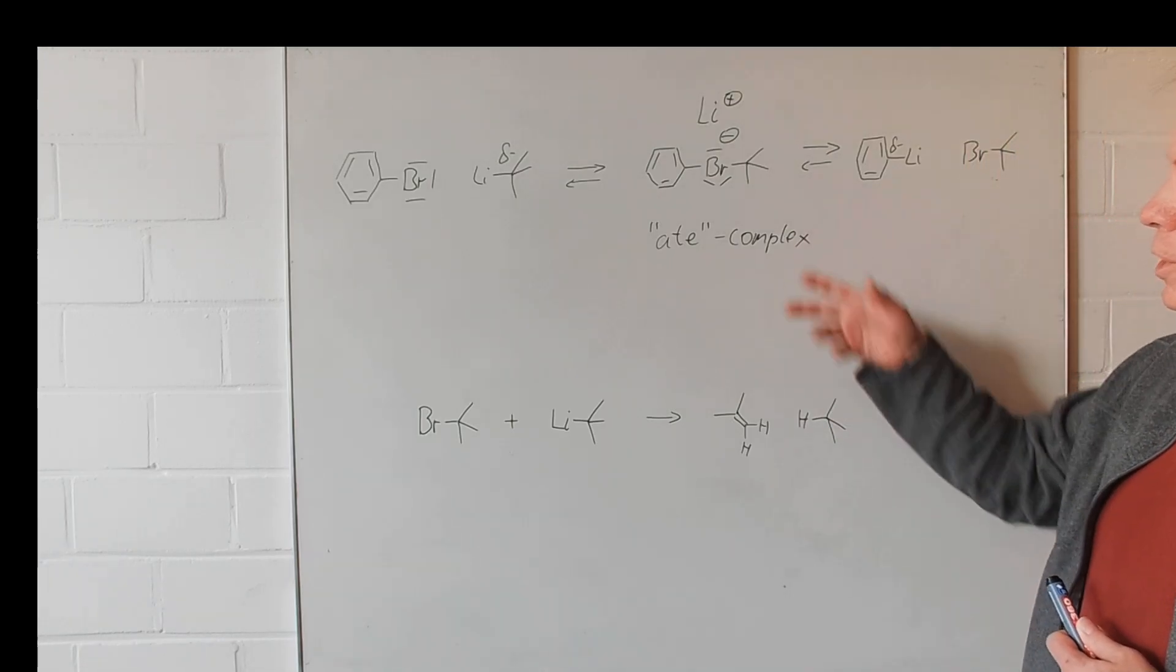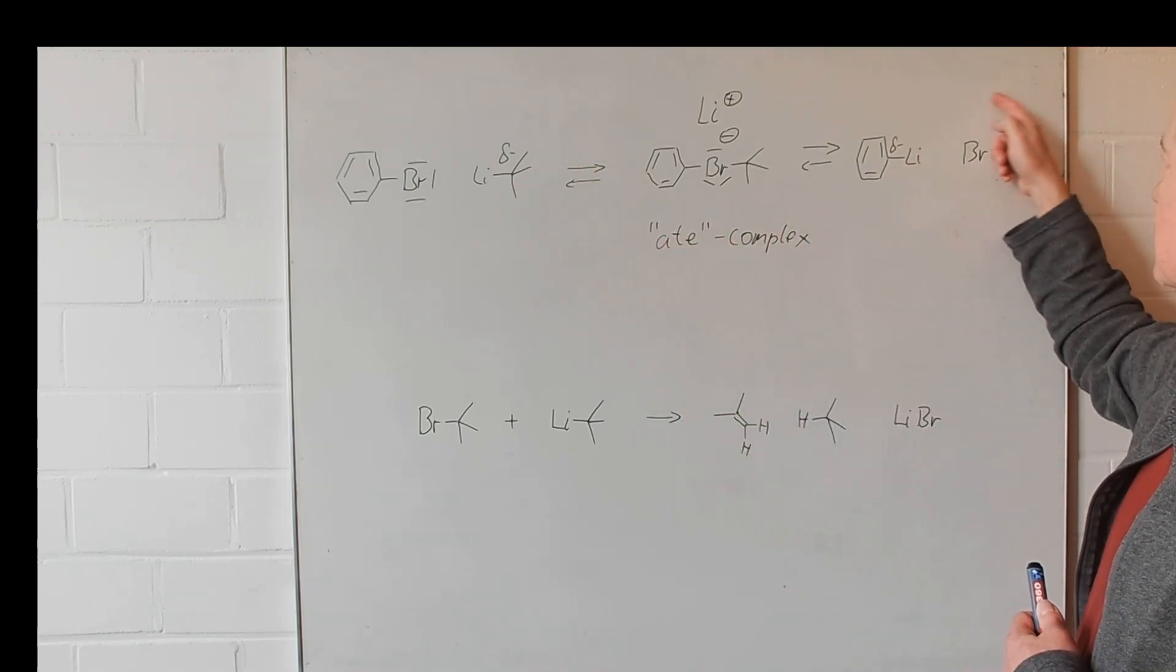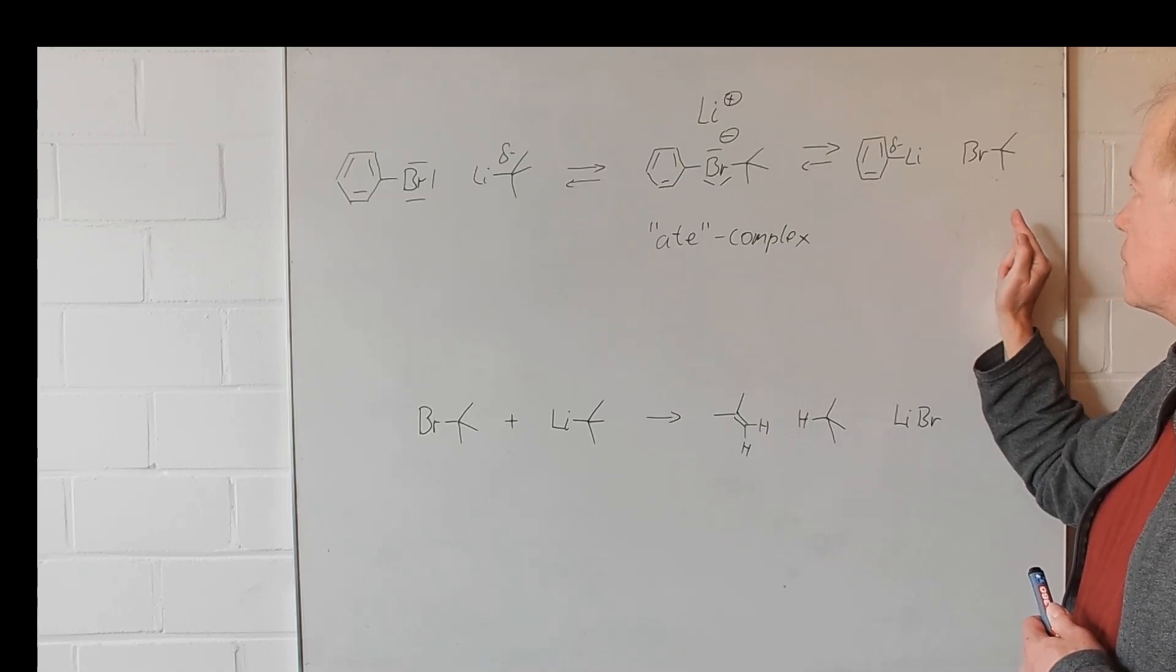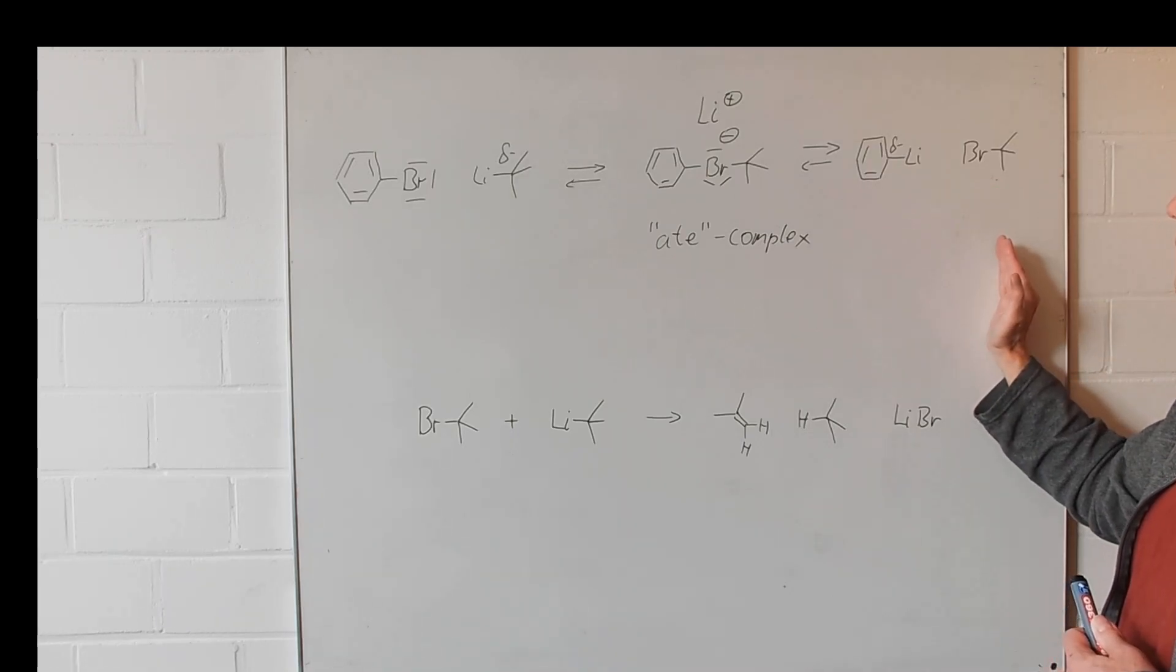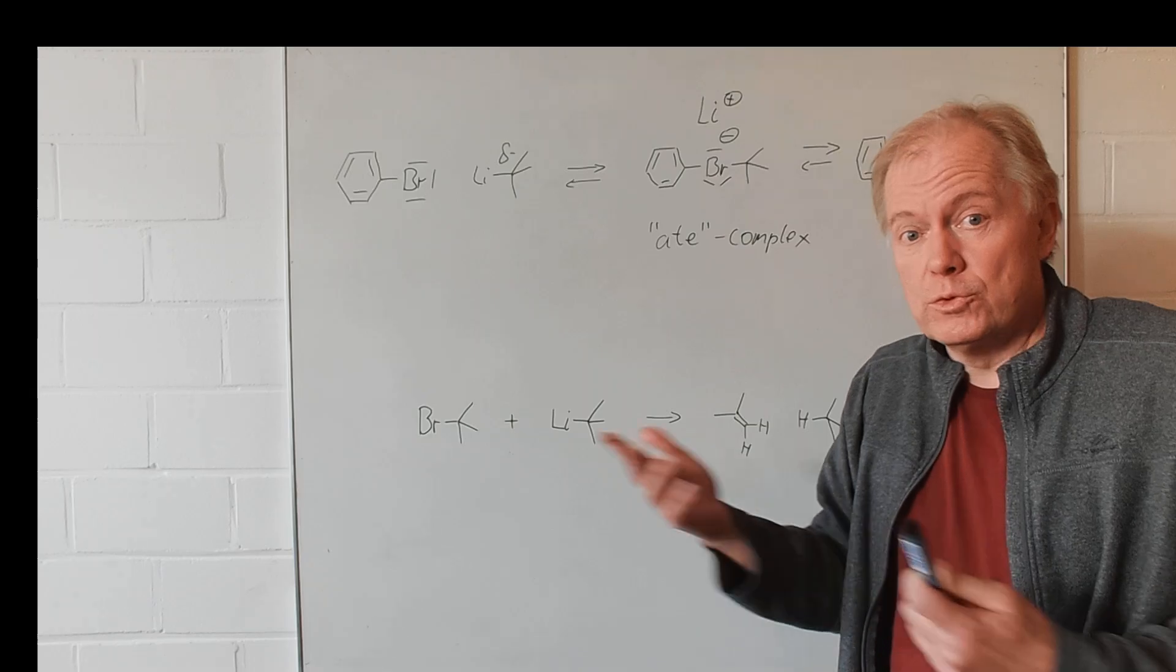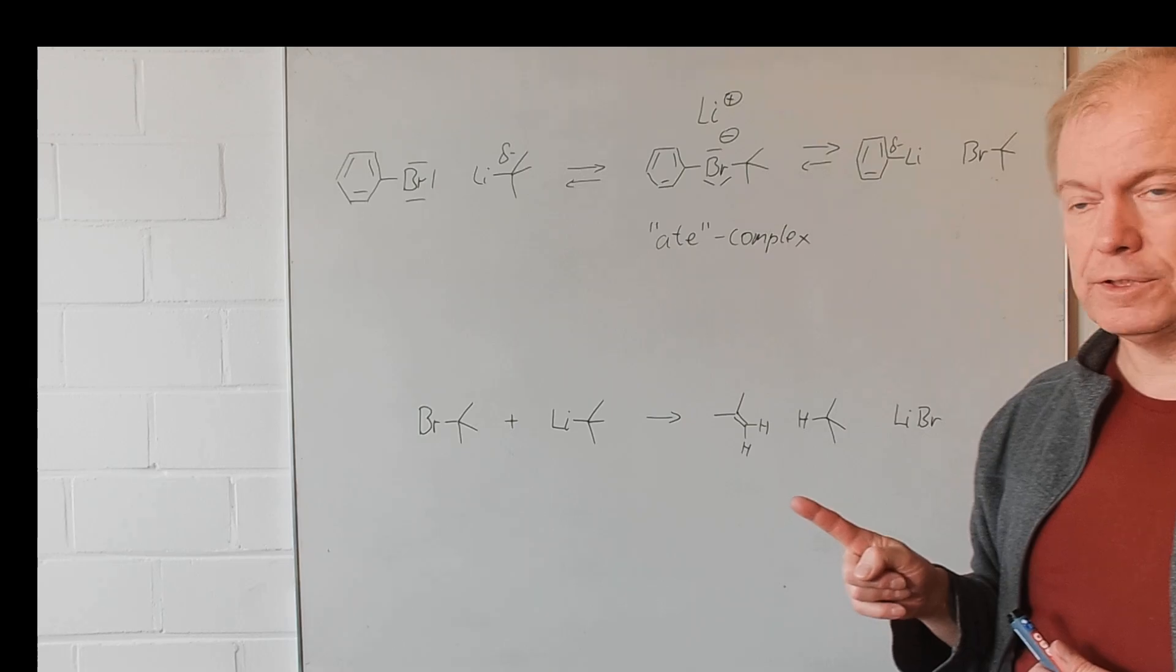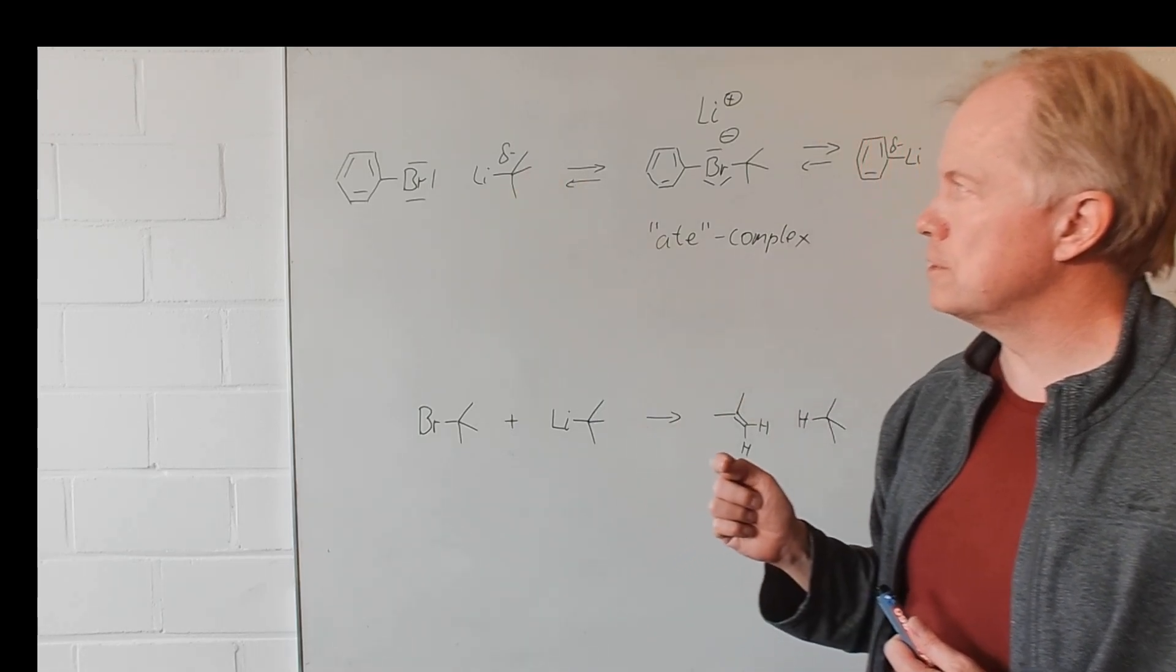So what is the advantage in using tertiary butyl lithium? In this case, tertiary butyl bromide is formed, and this is of course an alkylating agent and could cause some following up reactions we don't want to see. Well, if we add a second equivalent of tertiary butyl lithium, we start with two equivalents of tertiary butyl lithium.